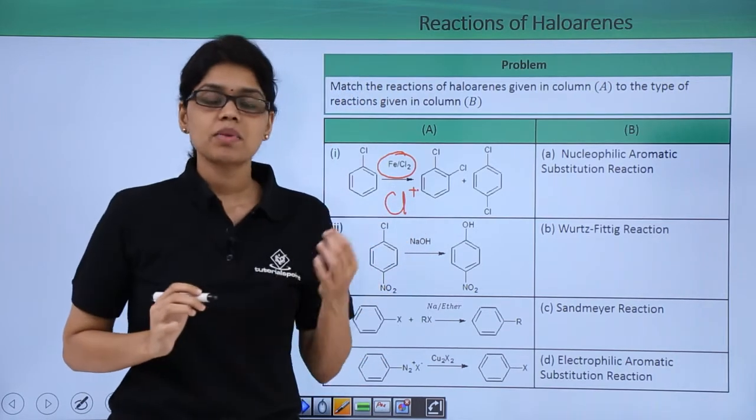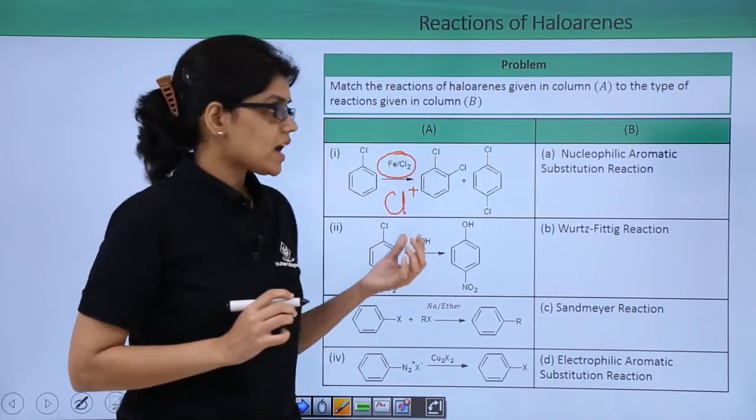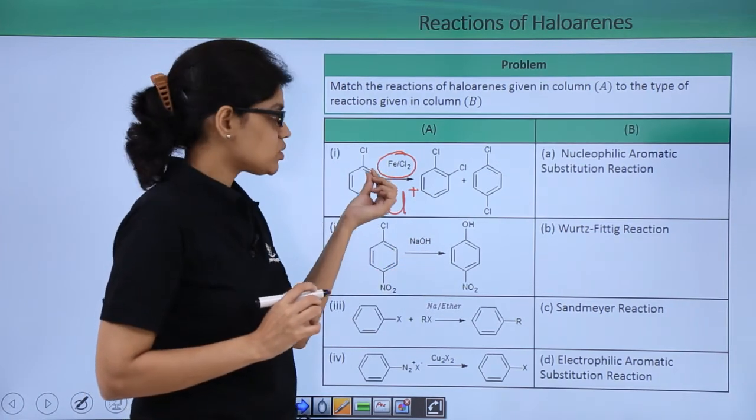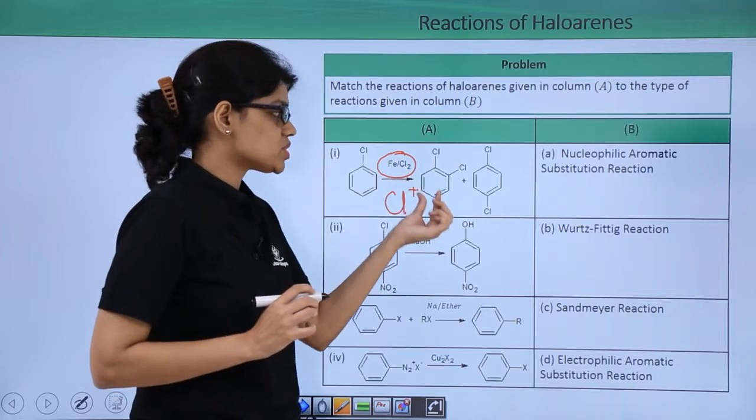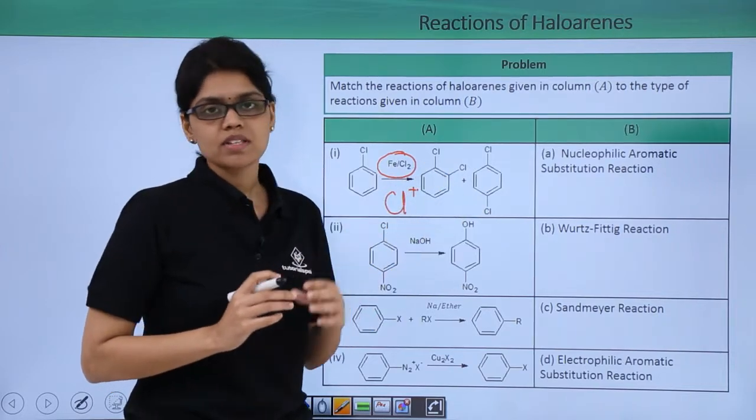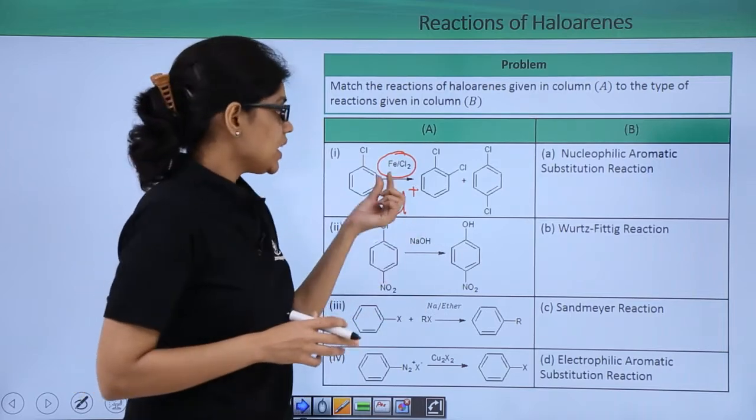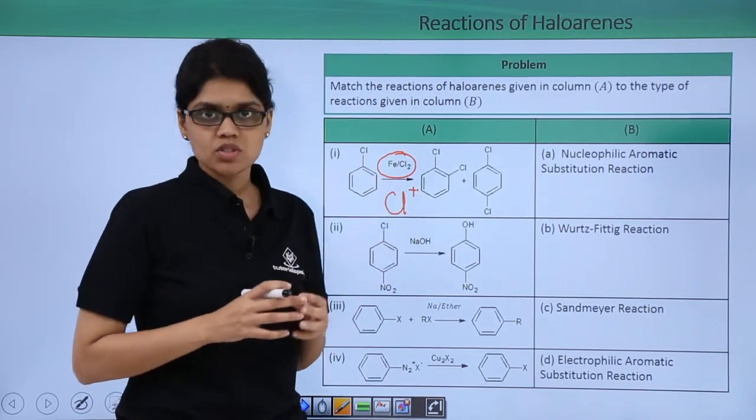Cl plus is nothing but an electrophile and in the final product we can see that Cl plus has substituted the hydrogen atom from ortho and para position to give us the corresponding products. So this is a typical example of electrophilic aromatic substitution reaction.